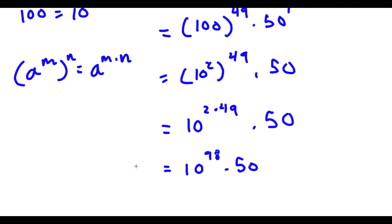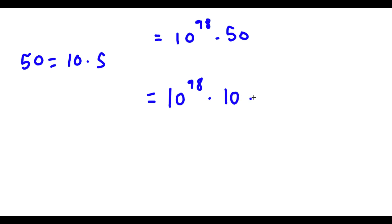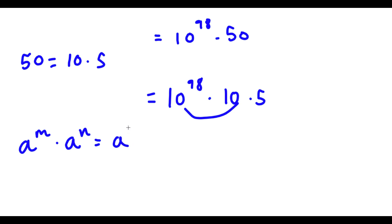Now, although we've pretty much simplified this as much as we can, we can always simplify more by simplifying this 50. So 50 here, this is the same thing as 10 times 5. So now I have 10 to the power of 98 times 10 times 5. If you notice, 10 to the power of 98 and 10 both have the same bases. And if two terms have the same bases, then you can always multiply them. So I can say a to the power of m times a to the power of n equals a to the power of m plus n. So in this case, 10 here is the same thing as 10 to the power of 1.